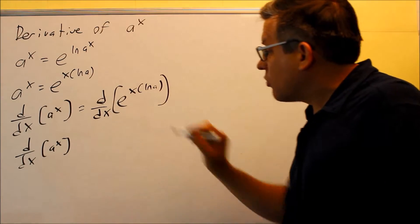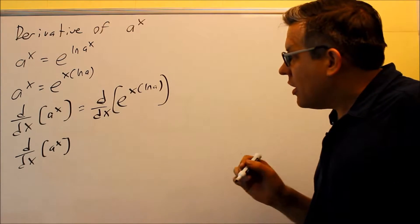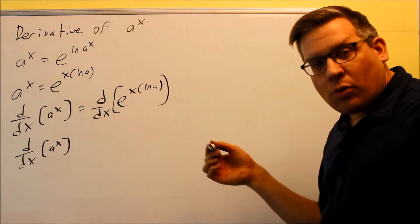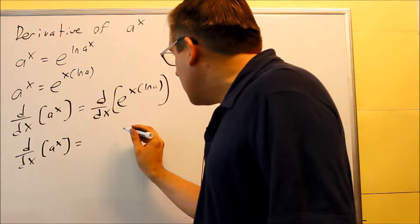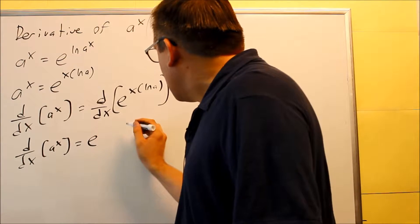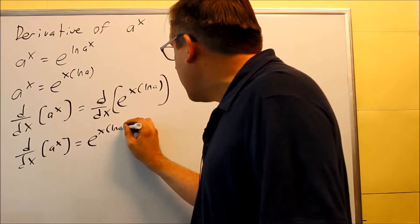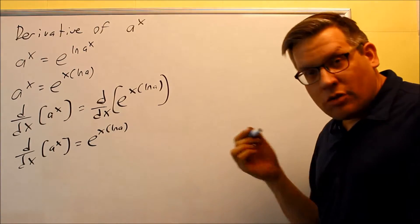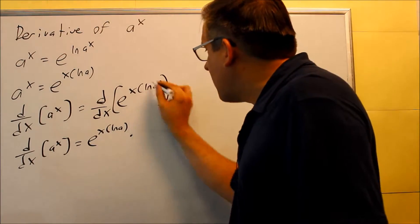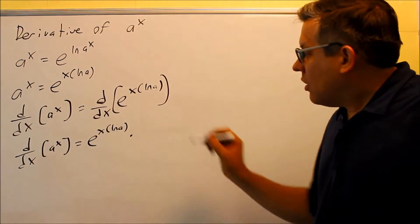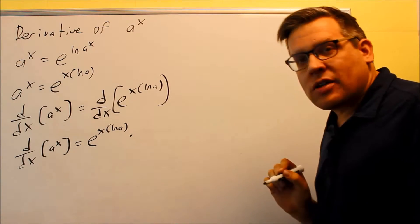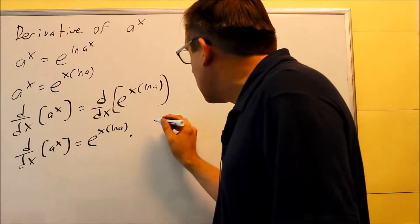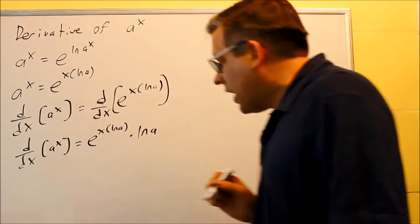Now, when I do this one, I need to use the e to the u times u-primed formula. So this derivative is going to be e to the x ln a, so e to the u, and then times the derivative of the exponent. Now, what do I have here? I actually have a constant times x, ln a is a constant, so I can just write that as ln a.